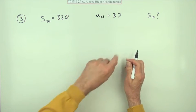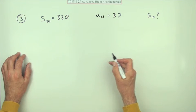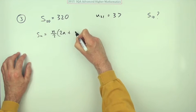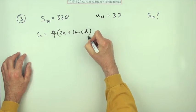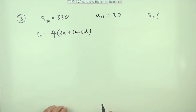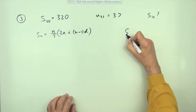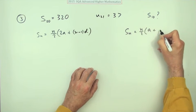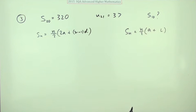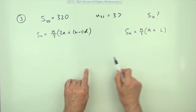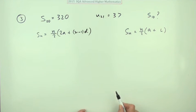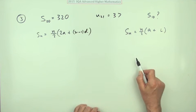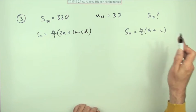It all depends which formula you use for the sum of the terms. You could either use S_n = n/2 × (2a + (n−1)d), where a is the first term and d is the common difference, or you could use the original form it came from: n/2 × (a + l), the first plus the last term.